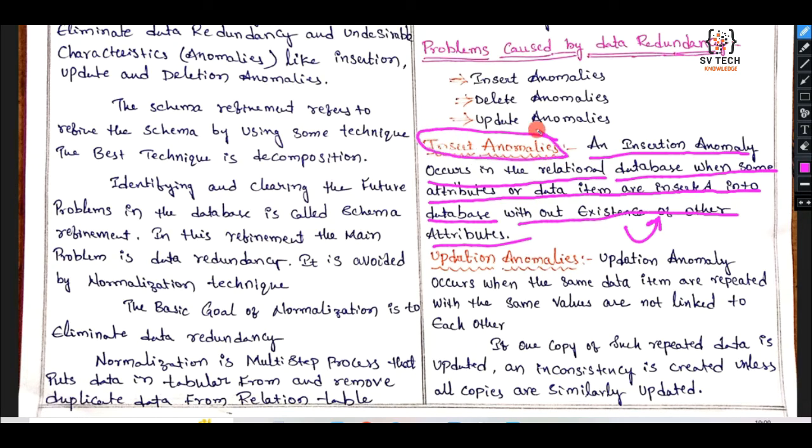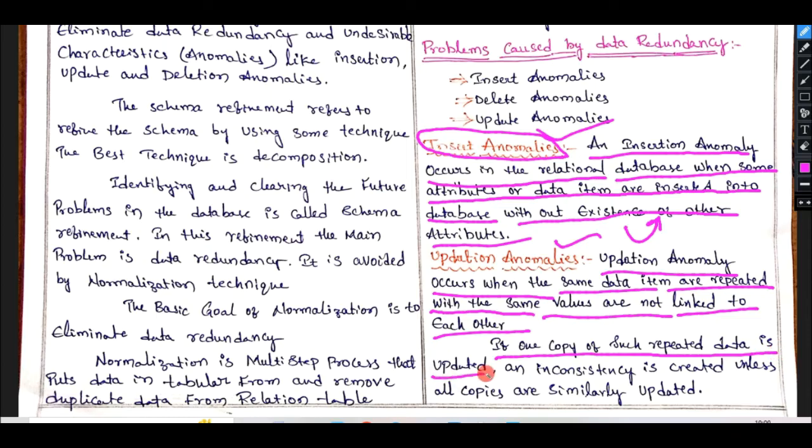Updation anomalies: Updated anomalies occur when the same data items are repeated with the same values or not linked to each other. Same data, already known data - if one copy of such repeated data is updated, an inconsistency is created unless all copies are similarly updated.